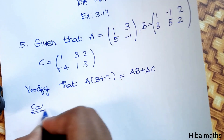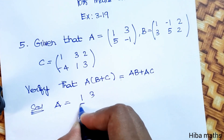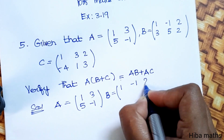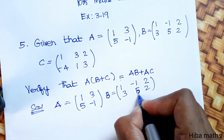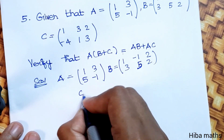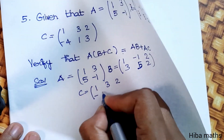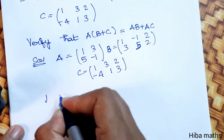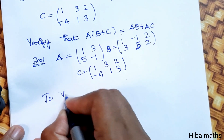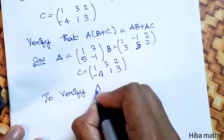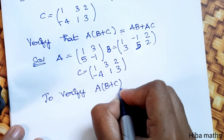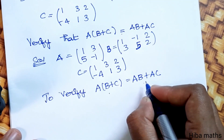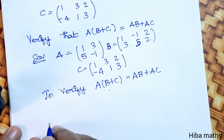Solution: given A is equal to [1,3;5,-1], B is equal to [1,-1,2;3,5,2], C is equal to [1,3,2;-4,1,3]. To verify: A(B+C) = AB + AC. This is the LHS and this is the RHS. Left hand side is equal to right hand side.